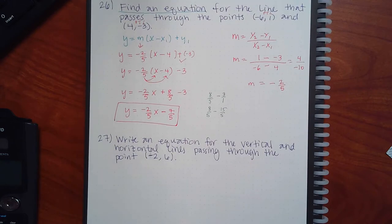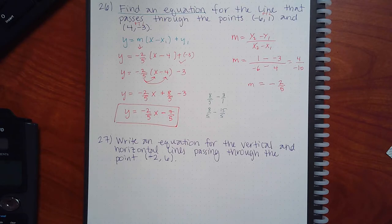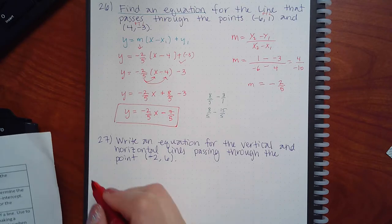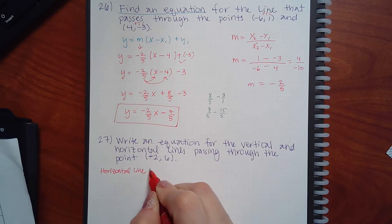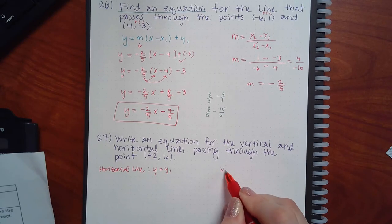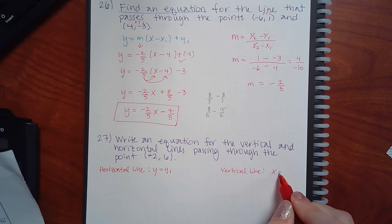Problem 27 is different. Everything we've done so far has been diagonal lines, and that's the most common, but every now and then you get a vertical or horizontal line. We need to know how to write the equations of those as well. For a horizontal line, the equation is y = y1, and for a vertical line, the equation is x = x1.